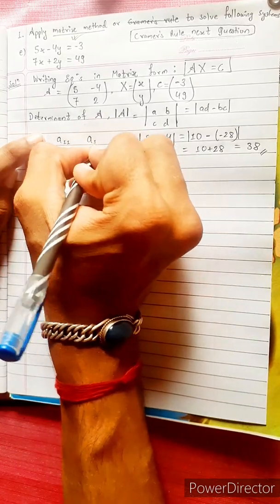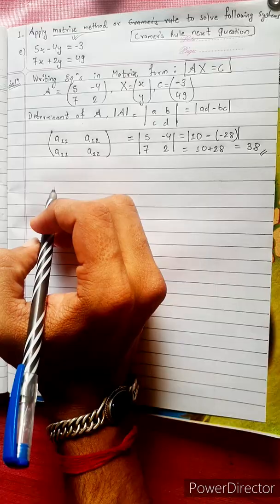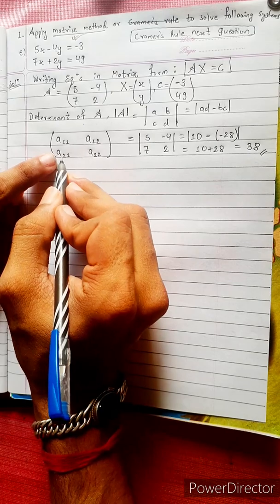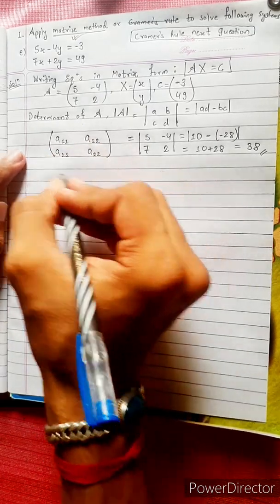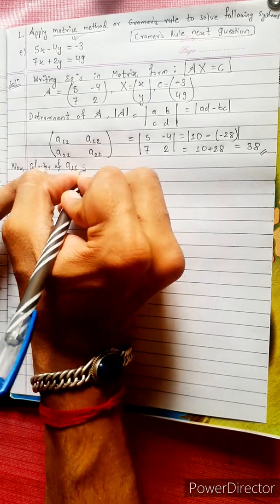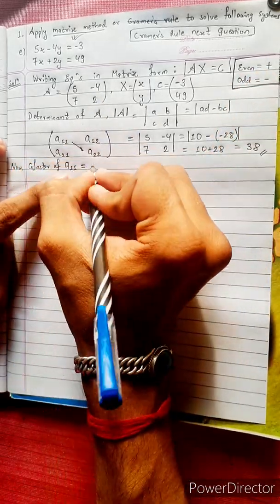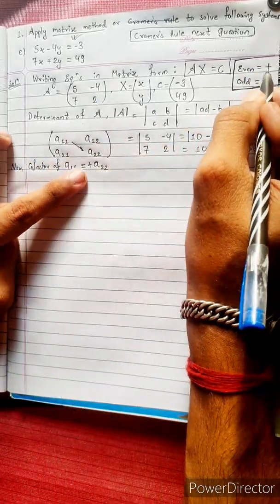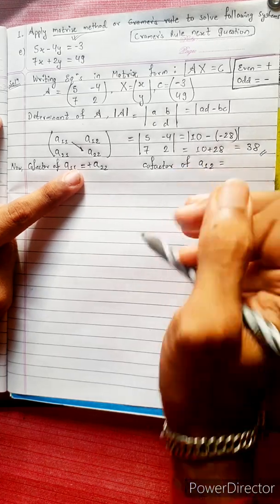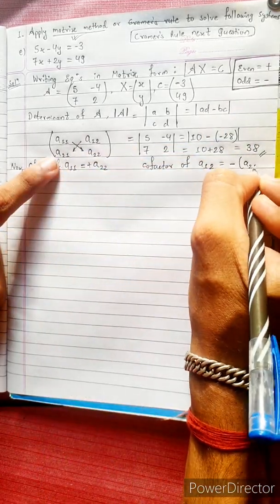The matrix form has elements: a11 (first row, first column), a12 (first row, second column), a21 (second row, first column), a22 (second row, second column). The cofactor of a11 is positive: (-1)^(1+1) times a22. The cofactor of a12 is (-1)^(1+2) times a21.